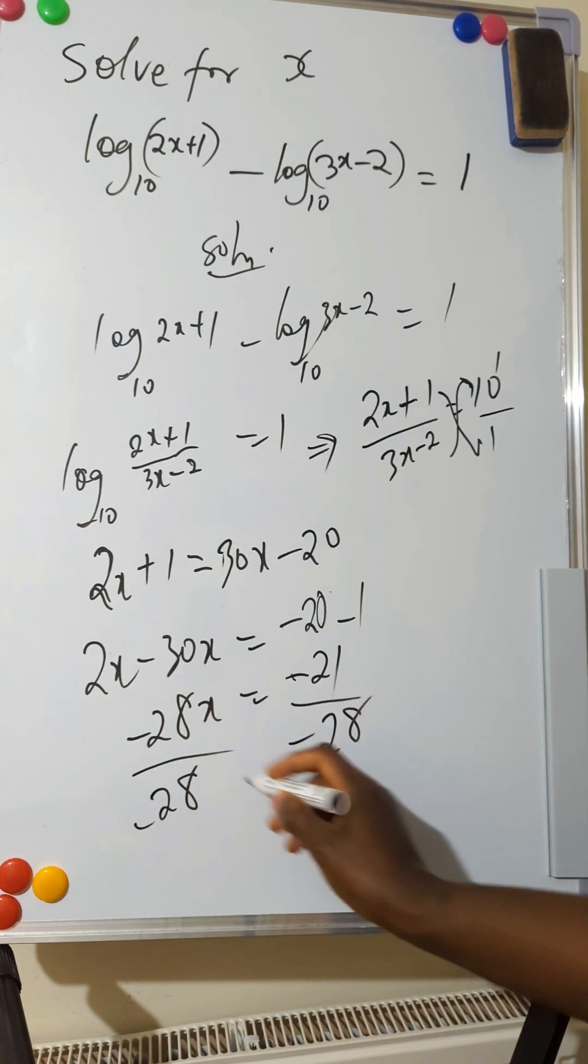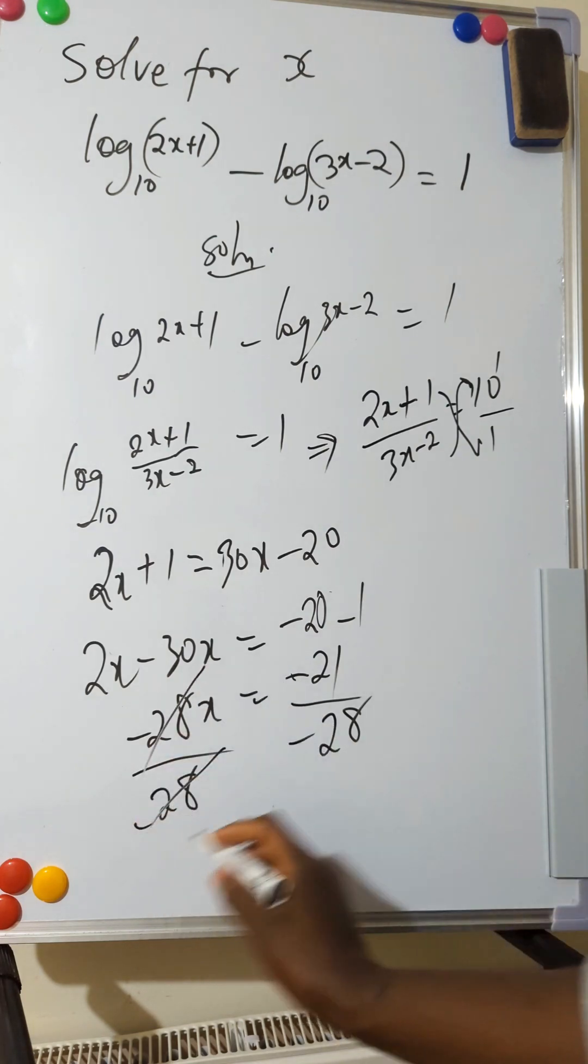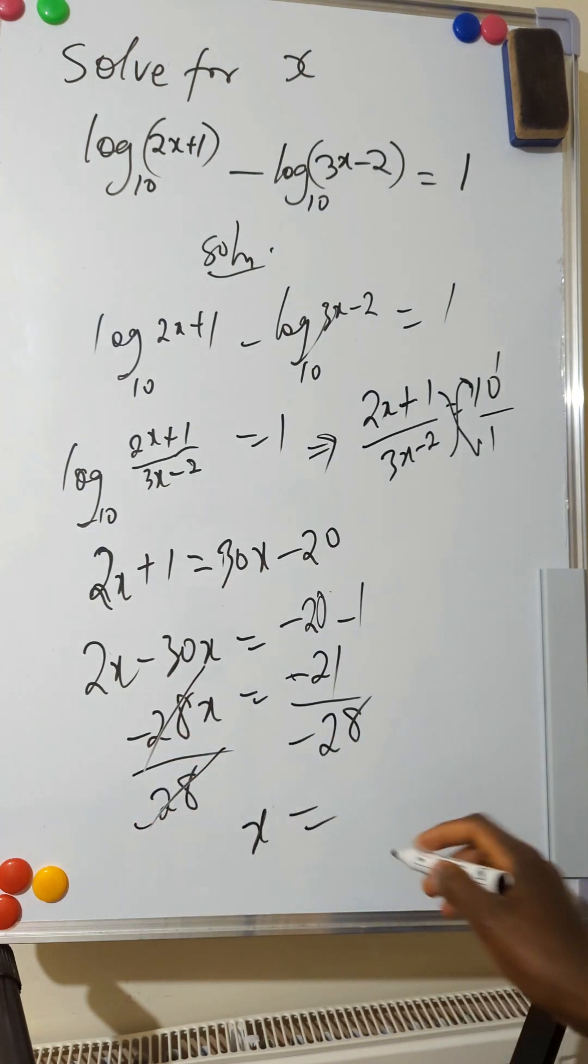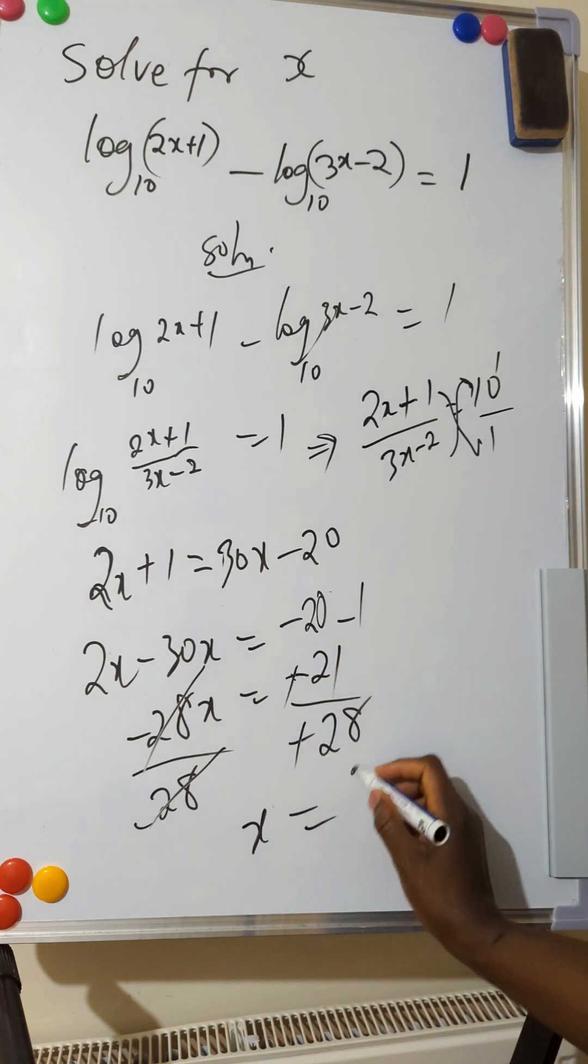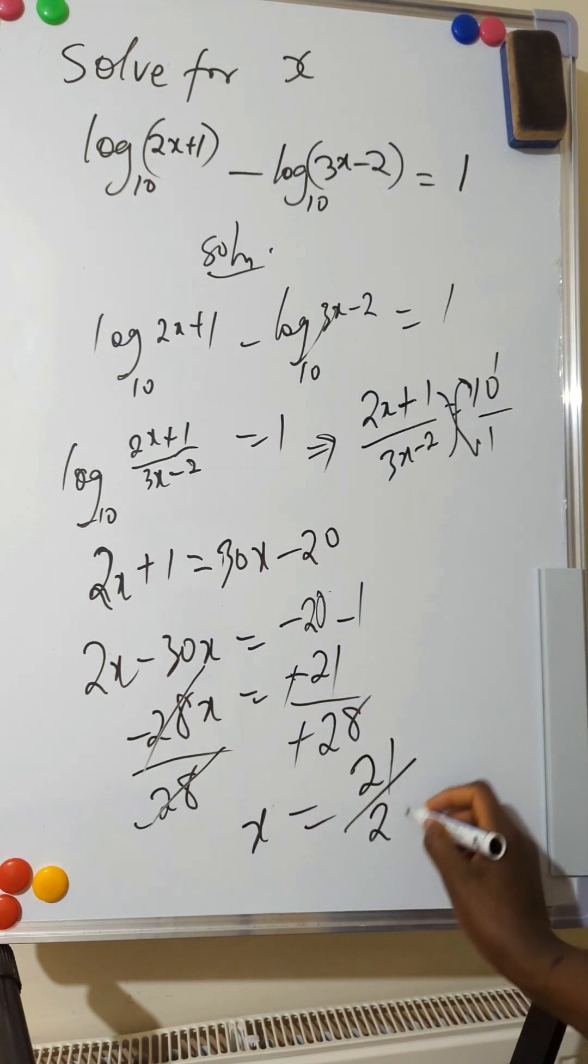Minus 28 cancels minus 28, so you have that x equals... the negatives cancel, so x equals 21 over 28.